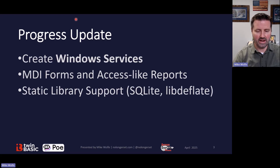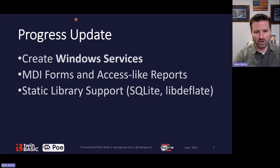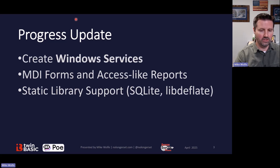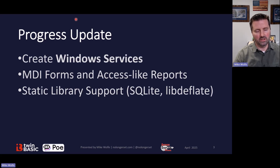Static library support is another thing that got added. You can take a C++ library, for instance SQLite or libdeflate which is used for compression. In VBA, we're used to using references to refer to another library, and the end user has to have that library installed on their computer. With static linking, that library's code gets built into the executable, so when you're deploying your application you don't have any external dependencies. That's a nice feature to streamline deployment.